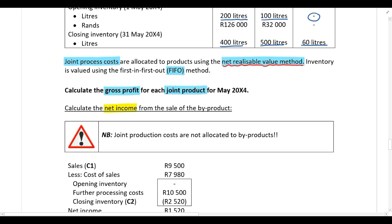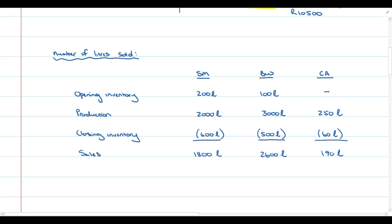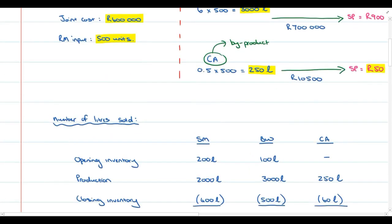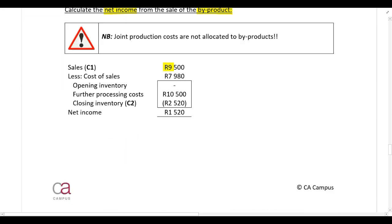Let's calculate the net income from the sale of the byproduct. Net income equals sales less cost of sales. Sales for the byproduct equal the number of liters sold multiplied by the selling price per liter. Cost of sales is calculated as opening inventory plus production costs less closing inventory. Joint production costs are not allocated to byproducts, so the only production costs are the further processing costs, which are incurred directly for the benefit of the byproduct.